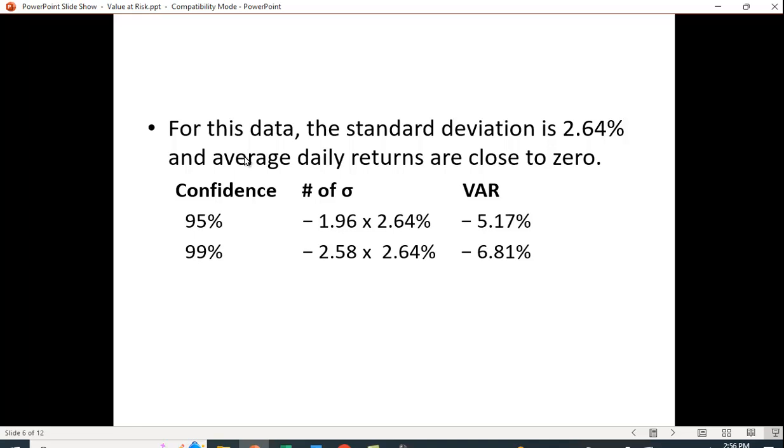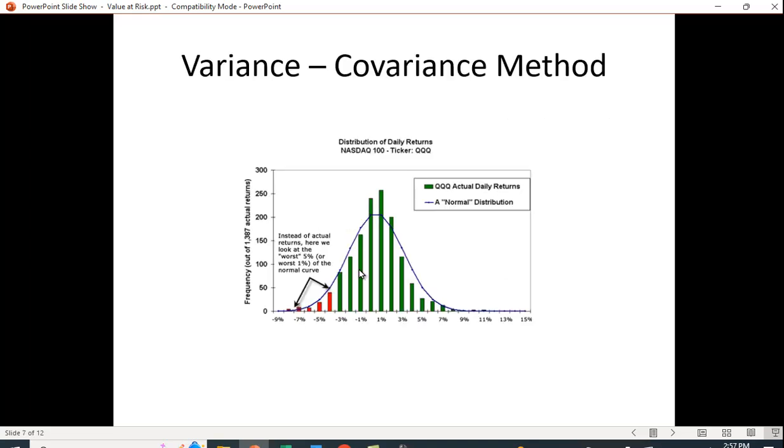For example, if the standard deviation is 2.64%, and the average daily returns are close to zero, then we expect, with 95% confidence, minus 5.17%, with 99% minus 6.81%. You get this distribution, and here's what you care about. The good side, when you're above the mean, is not a problem. We care about what's the worst that can happen to us.